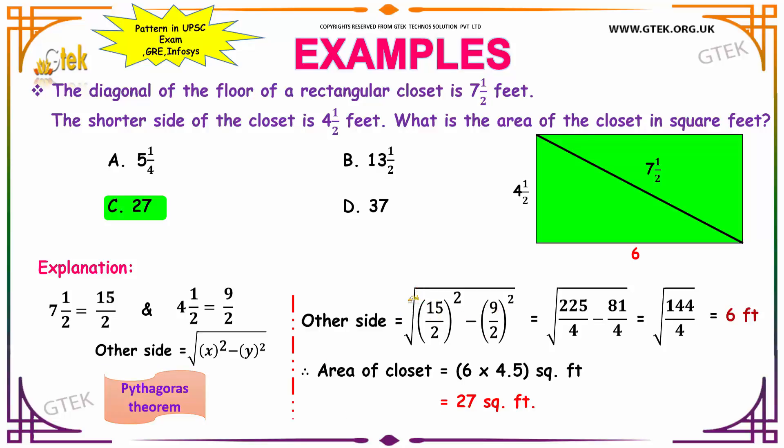So, your unknown side is equal to square root of 15 by 2 the whole square minus 9 by 2 the whole square, which is equivalent to 225 by 4 minus 81 by 4 square root, is equal to square root of 144 by 4. Our final answer is 6 feet.